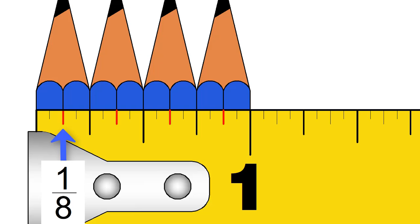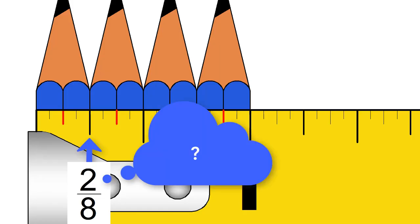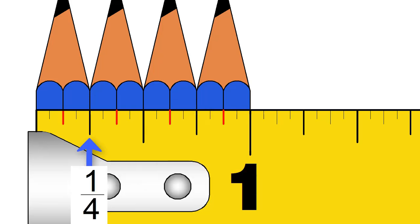Here is one eighth. The next mark would be two eighths, but we already saw that was a quarter inch. Here is three eighths. Four eighths is a half. Five eighths. Six eighths is three quarters. Here is seven eighths. And finally, eight eighths, or one inch.